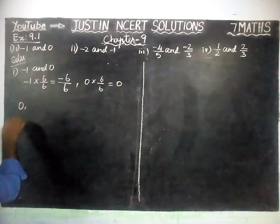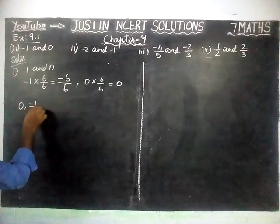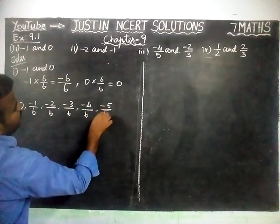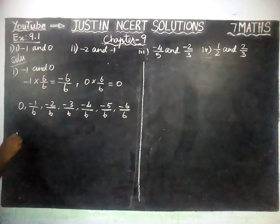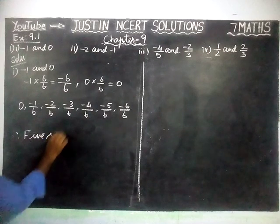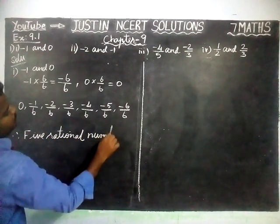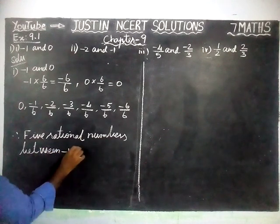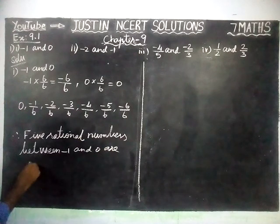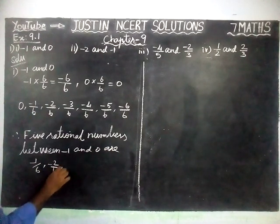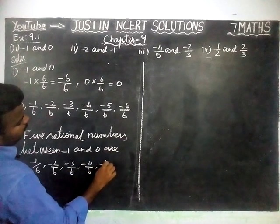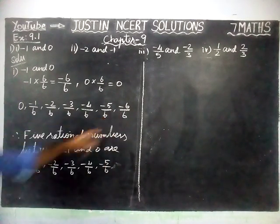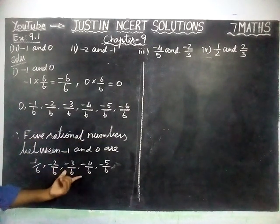So, in between 0 and minus 6 by 6, the numbers are: minus 1 by 6, minus 2 by 6, minus 3 by 6, minus 4 by 6, minus 5 by 6, minus 6 by 6. Therefore, 5 rational numbers are: minus 1 by 6, minus 2 by 6, minus 3 by 6, minus 4 by 6, and minus 5 by 6. Minus 6 by 6 will not come.